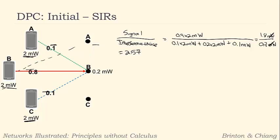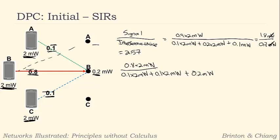Now let's move on to B. B has a direct gain of 0.8 — lower than A and C which are both 0.9 — times its initial transmit power of 2 milliwatts. So the signal is 0.8 times 2 milliwatts. The interference comes from C and A: 0.1 times 2 milliwatts plus 0.1 times 2 milliwatts, plus the receiver noise of 0.2 milliwatts — higher than it was for A. That gives 1.6 milliwatts divided by 0.6 milliwatts, and the SIR for B is 2.67.